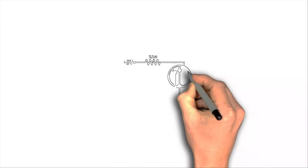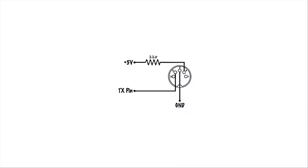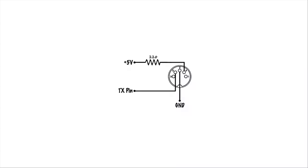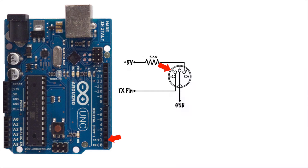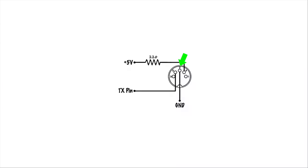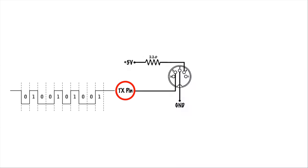Now let's go back and look at the schematic. We'll start by taking a look at a MIDI output circuit. This is a very simple circuit consisting of just a MIDI jack and a 220-ohm resistor. The schematic shows pin 4 of the MIDI jack connected to a constant 5-volt source through the resistor. Pin 5 of the jack is connected to the Arduino's transmitter pin. Finally, pin 2 of the jack is connected to ground — this will connect to the shield of the MIDI cable when it's plugged in.